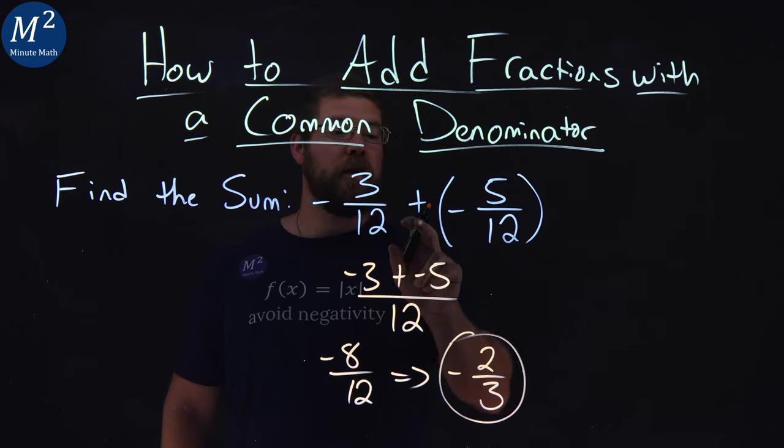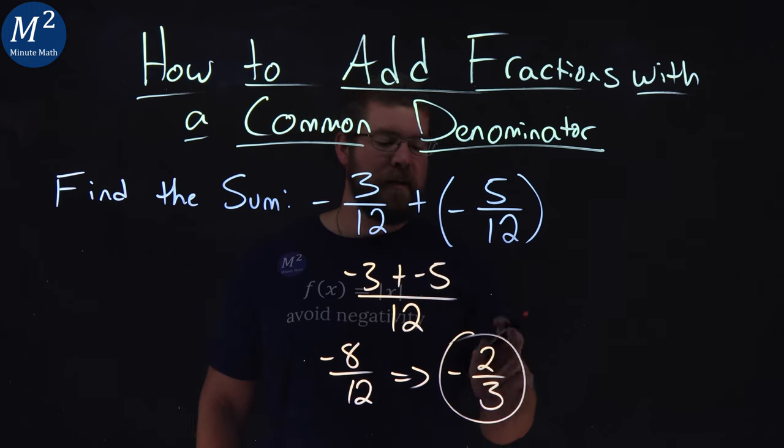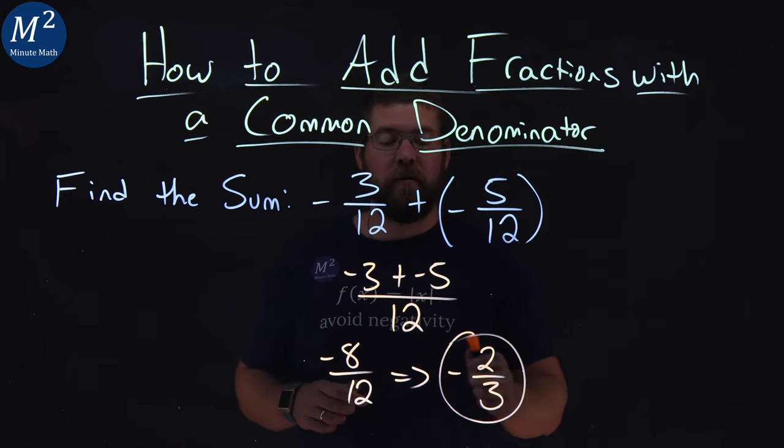Negative 3 over 12 plus a negative 5 over 12 simplifies to be a negative 2 over 3.